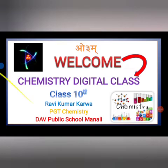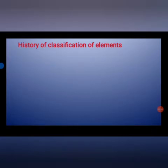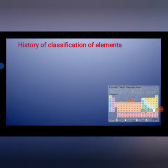We are studying about the classification of elements. There are contributions of so many scientists to classify elements in a proper way on the basis of their properties. More than a hundred elements have been discovered to date, so we need one very effective classification — a very effective periodic table — so we can understand the properties of each element easily.